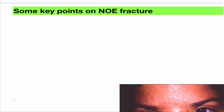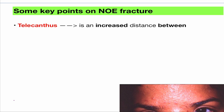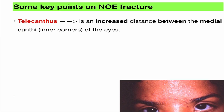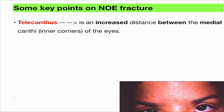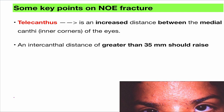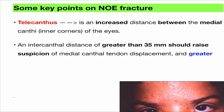Now, a very important feature of NOE fracture is telecanthus. What is telecanthus? It's an increased distance between the medial canthi of the eye — or the corners of the eye. The normal value of the intercanthal distance is 35 mm. Anything greater than 35 mm should raise suspicion of a fracture. Greater than 40 mm is considered diagnostic for NOE fracture.